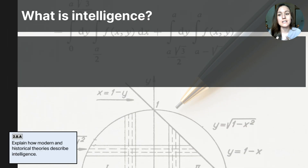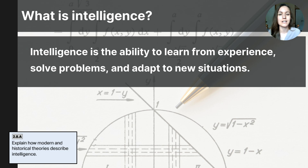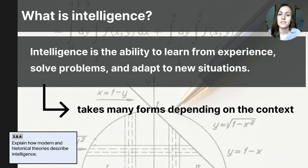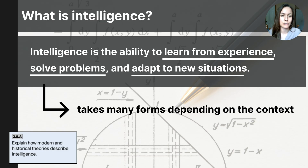So whether individuals are in Western societies or indigenous cultures, we can see that something bigger is underlying their abilities. In essence, intelligence is the ability to learn from experience, to solve problems, and to adapt to new situations. Intelligence is complex — it's influenced by genetics, environment, and culture, and it takes on many different forms depending on the context. But at its core, it involves learning from experience, solving problems, and adapting to new situations.